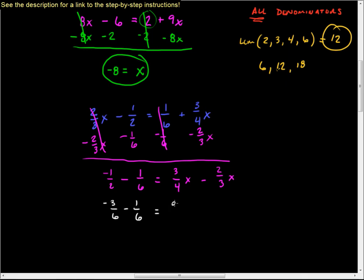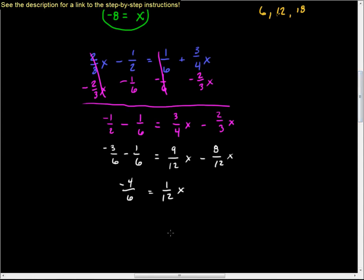So this is going to be nine over 12 x minus eight over 12 x. This is going to give me negative four sixths is equal to one twelfth x. If I go through and I reduce on the left, you can see this is just awful, isn't it? I go through and reduce on the left and I get negative two thirds equals one twelfth x.